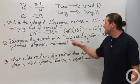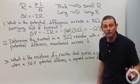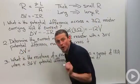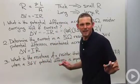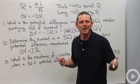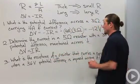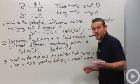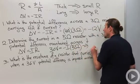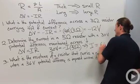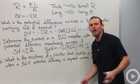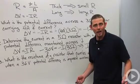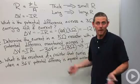Determine the current in a 5-ohm resistor with a 30-volt potential difference maintained across it. Starting with Ohm's Law: delta V equals minus IR. So 30 volts equals minus I times 5 ohms. That means the current must be 6 amps. The minus sign tells me the direction the current is flowing, but since the problem doesn't ask for direction, I just report the magnitude.